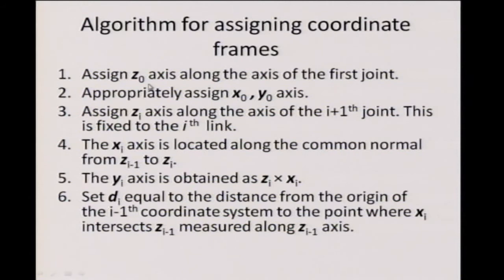Starting with z_1, you assign it along the second joint — and this is fixed to the first link. These indices are important. Then you locate the x_1 axis along the common normal; if it is a special case, you handle it accordingly. You locate y_i as the cross product. Now look at the formal definition of d_i: it equals the distance from the origin of the (i−1)th coordinate system to the point where x_i intersects z_{i-1}, measured along the z_{i-1} axis.